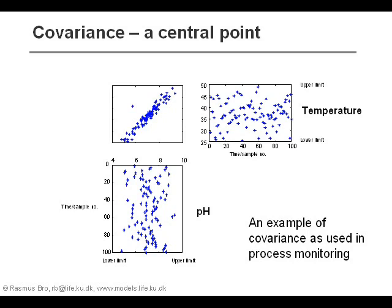But if we plot the two against each other, we can see that maybe that's not the case. Some points are within range for both temperature and pH, and they also have the same relation between temperature and pH as the others. But for this one red measurement, even though it is well within control for both pH and temperature, the relation between pH and temperature is broken — so clearly there's something wrong here, something that needs attention. This is a very useful concept in process monitoring, but also in medical diagnostics and a number of other situations.